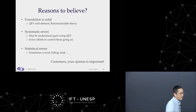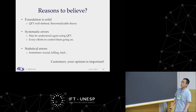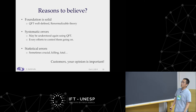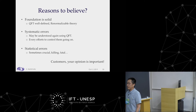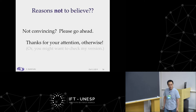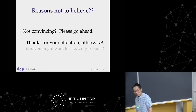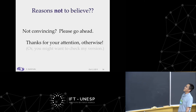I'm finishing. There are reasons to believe that lattice calculations have a very solid theoretical foundation: a unique continuum limit due to renormalizability, and we do every effort to understand the systematic errors. Of course there is the problem of statistical errors, but we are steadily improving the precision for many quantities. Customers, your opinion is important — and there are reasons not to believe as well. If my talk is not convincing, please go ahead. If it was good enough, thank you for your attention.